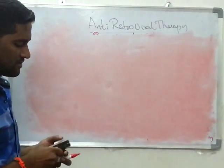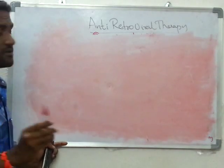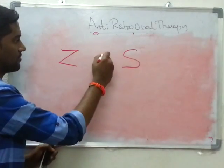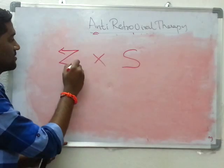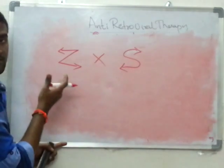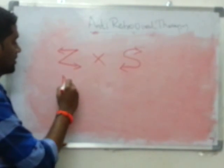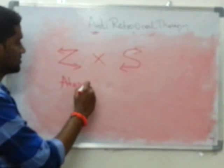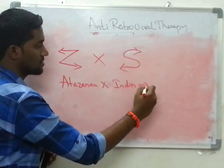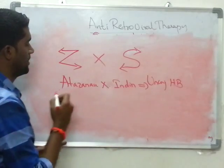A frequently asked topic: the following drug combinations should not be given together. First: Zidovudine and Stavudine should not be given together. Second: Atazanavir and Indinavir should not be given together, as both can cause unconjugated hyperbilirubinemia. Third: Lamivudine and Zalcitabine should not be given together. Fourth: Didanosine or Stavudine with Zalcitabine should also not be given together.